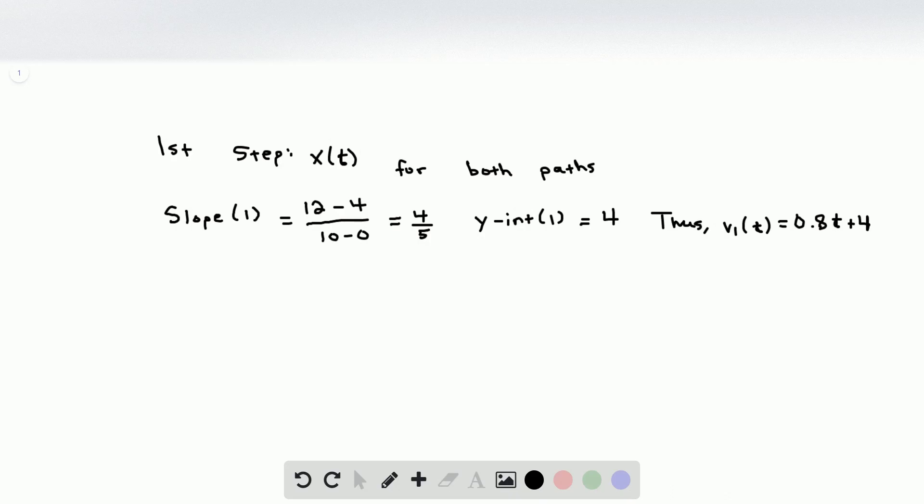Since the second path is hard to determine the y-intercept off of, we have to use something called point-slope form. We're still going to need the slope of the second path. So slope of 2 is y2 minus y1, which in this case is 0 minus 12 over 12 minus 10 being x2 minus x1. That ends up being negative 6.